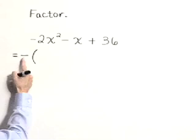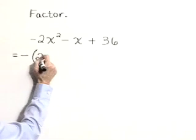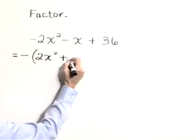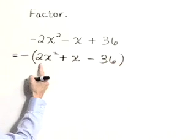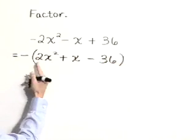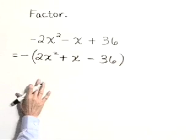So let's rewrite this as the negative of 2x squared plus x minus 36. Seeing this leading coefficient of our trinomial as a positive number just makes it a little bit easier to factor from here.